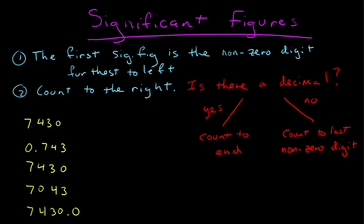That's number one, and you just start counting to the right. Now ask yourself the question: is there a decimal in your number? If there is, count to the end of the number. And if not, then count to the last non-zero digit. That's it. So let's see that in action.